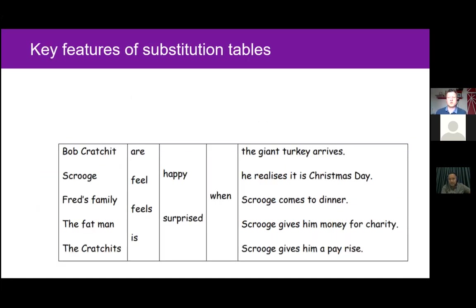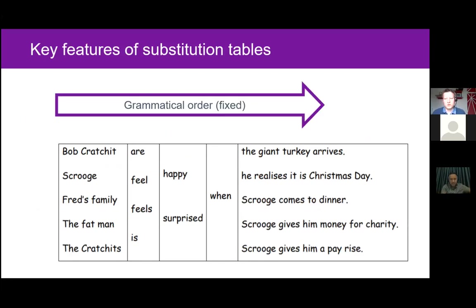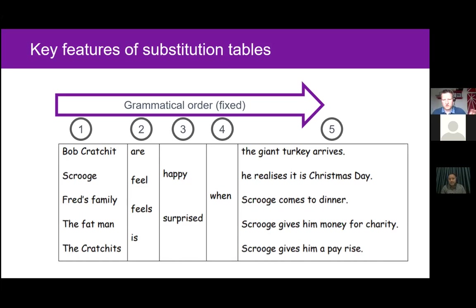The beauty of substitution tables is that the grammatical order of each sentence is fixed. A learner would always choose something from column one, then two, three, four, five — it's not a mix and match. The fixed nature of the order from left to right means that the cognitive load is reduced, as the order of the sentence is one less thing that learners have to process. This is particularly useful for developing learners' understanding of word order in English.